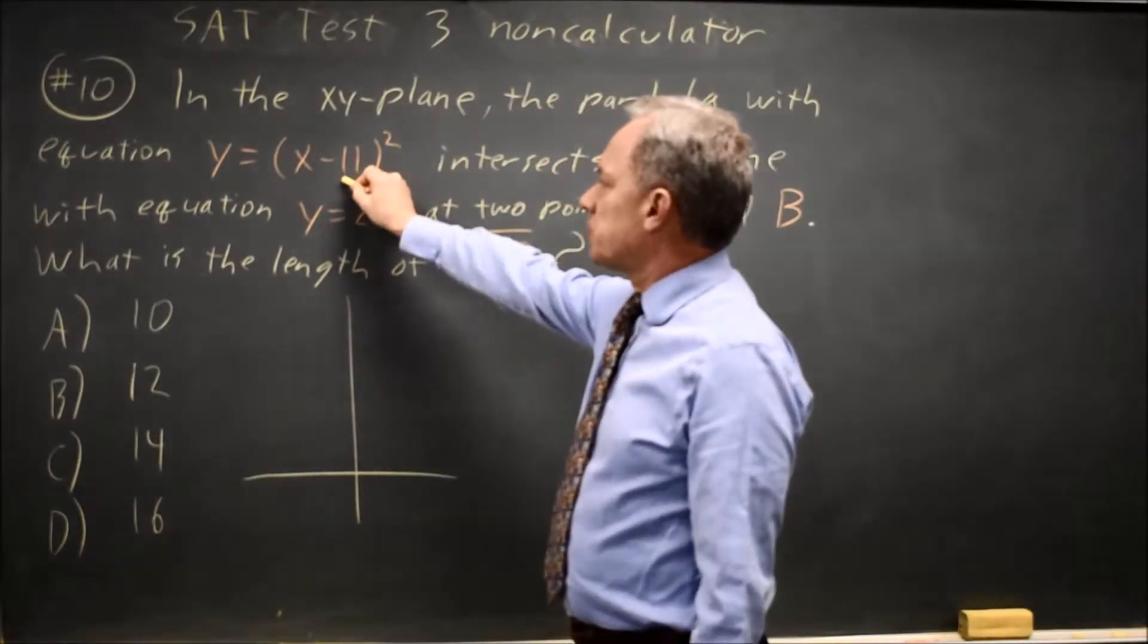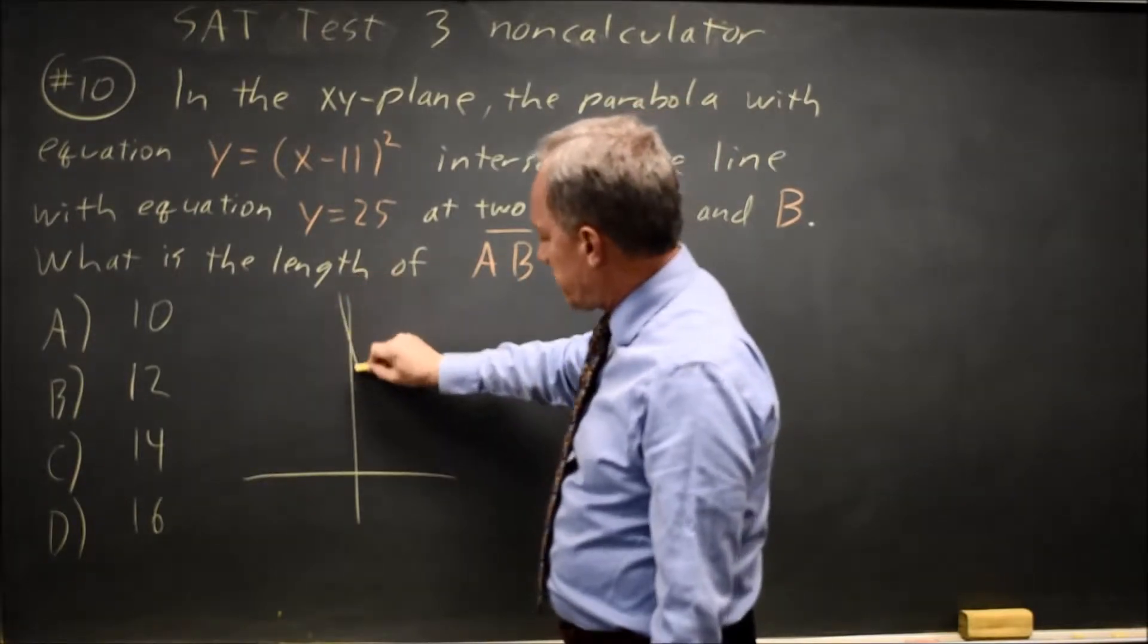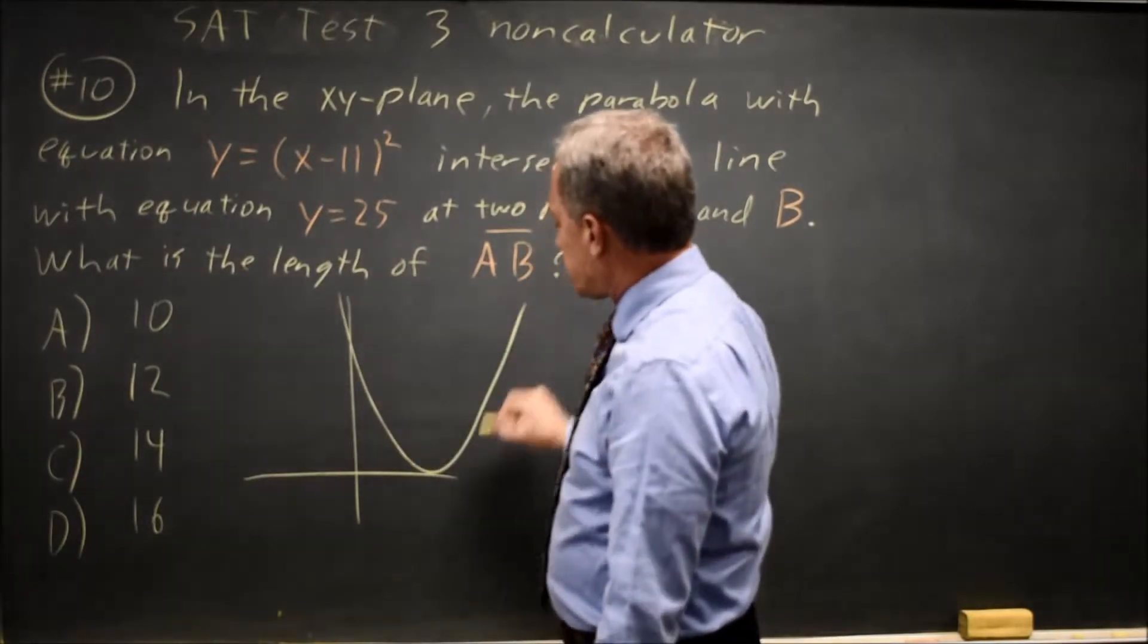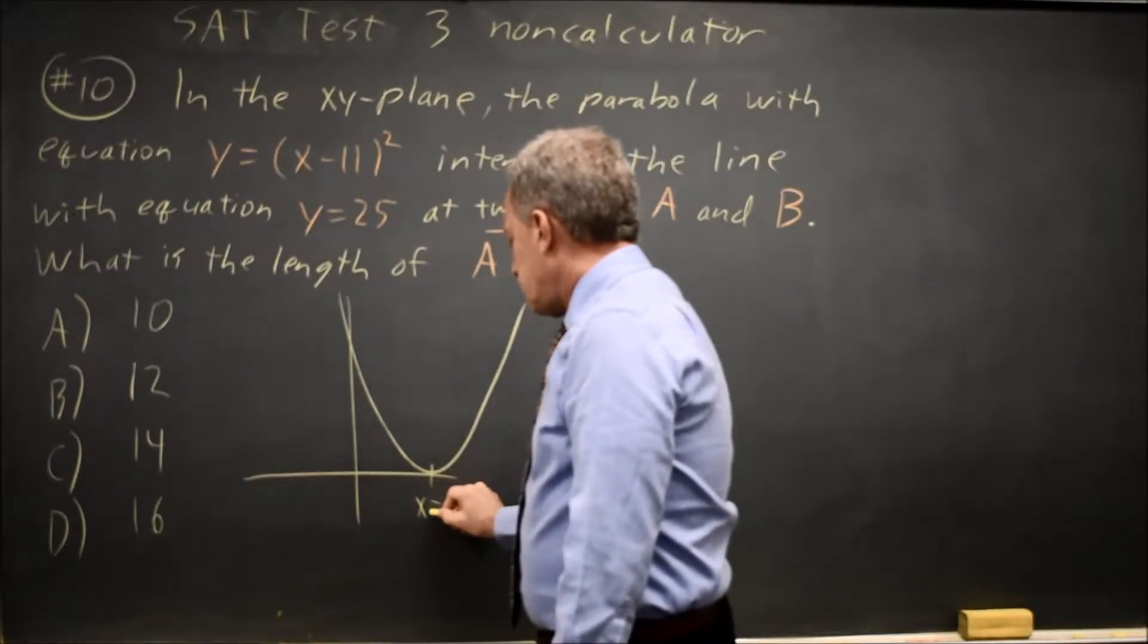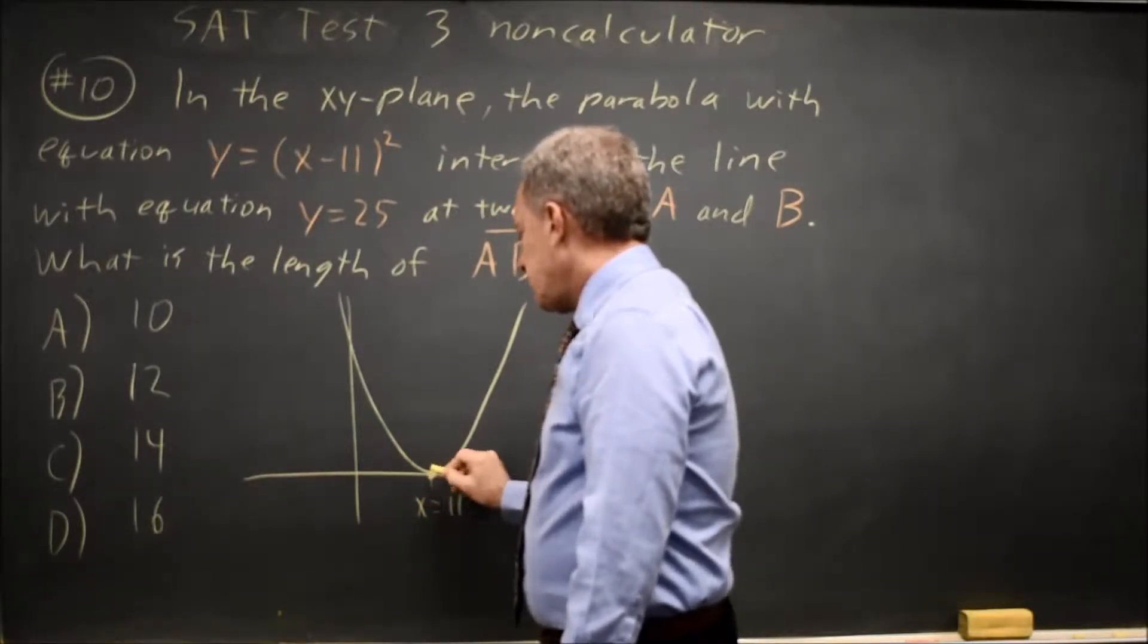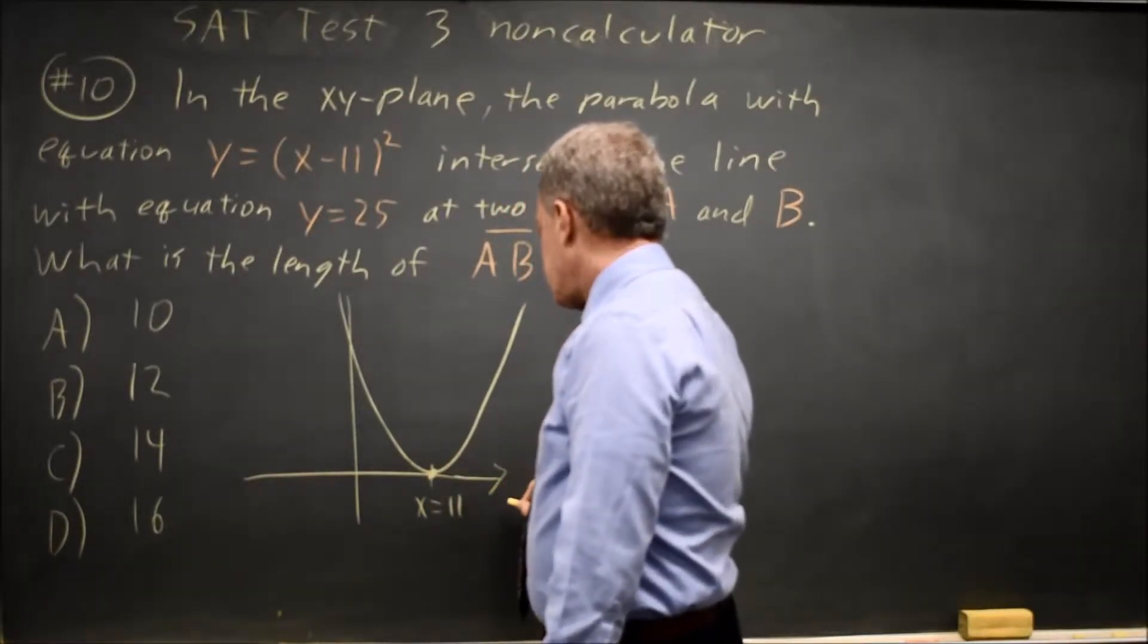This is y equals x squared translated to the right by 11. The graph looks something like this and just touches the x-axis at x equals 11.